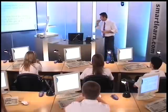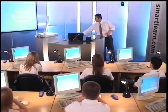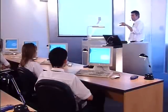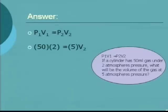We need to calculate what the volume will be after the pressure has increased. With any gas law question, focus first on the formula — P1 V1 equals P2 V2 — then identify what data you've been given and substitute it in. We're given the starting pressure and starting volume. So: 50 times 2 equals 5 times V2. Where does the 5 come from?